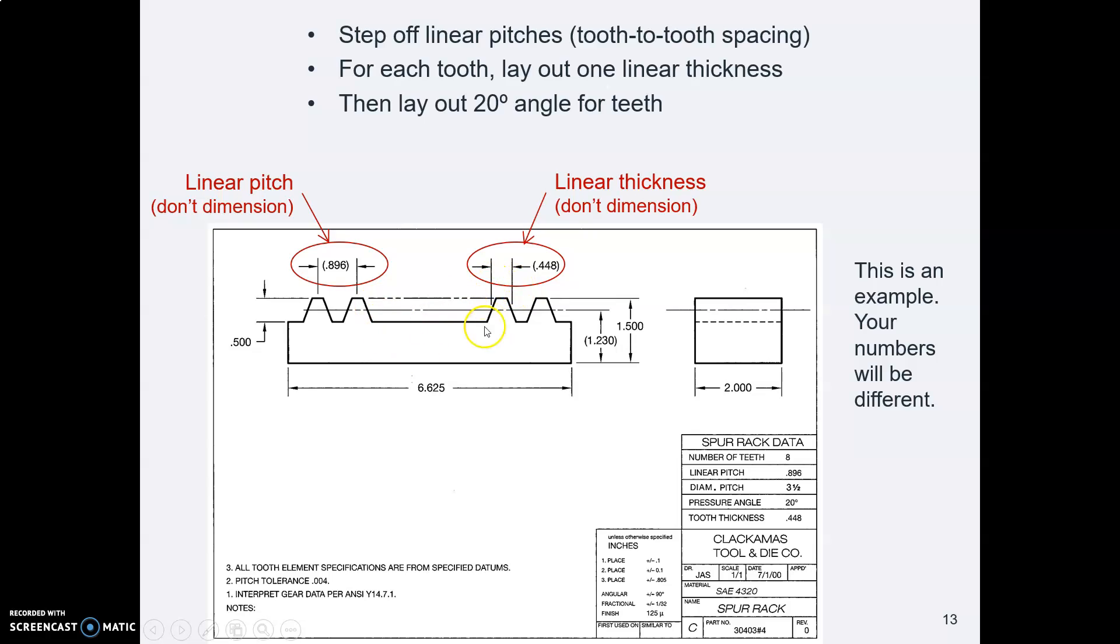Once you have those construction lines in there, now you can draw in some 20 degree angles for the sides of the teeth. And what I like to do is I draw maybe two teeth and do some trimming so I get that little short root between the teeth. And then I do copy, copy, copy.